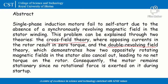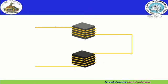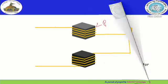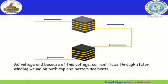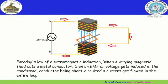I will be explaining the cross field theory. To explain this theory, let us first consider a two-pole single-phase induction motor. When the AC supply is given, current flows through the stator winding on both conductors, thus developing poles due to the flow of current. A magnetic field is generated on both the top and bottom windings. According to Faraday's law, when a varying magnetic field cuts a metal conductor, an EMF will be generated.